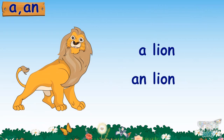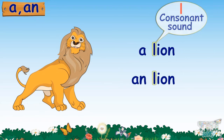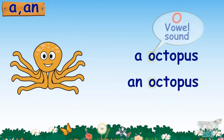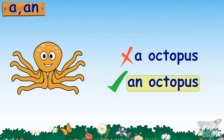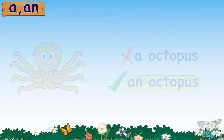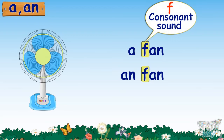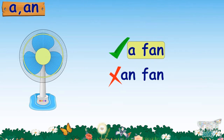Lion — lion begins with a consonant sound, the sound of letter L, so we will say: a lion. Octopus — octopus begins with the sound of letter O, which is a vowel, so we say: an octopus. Fan — it begins with a consonant sound, the sound of letter F, so we will say: a fan.